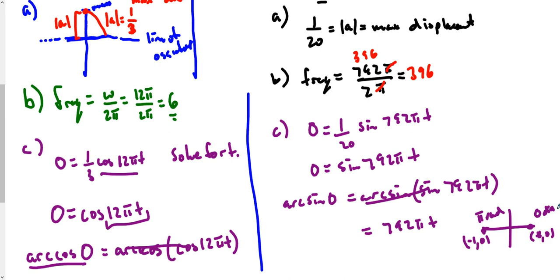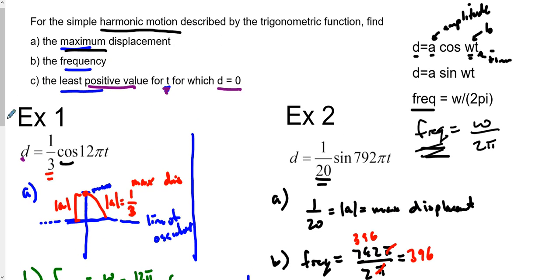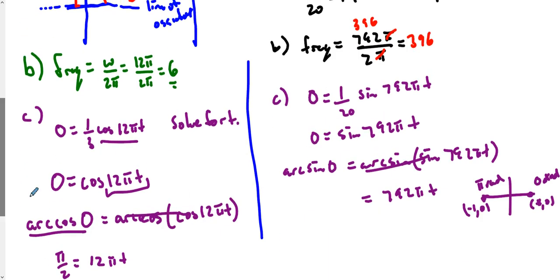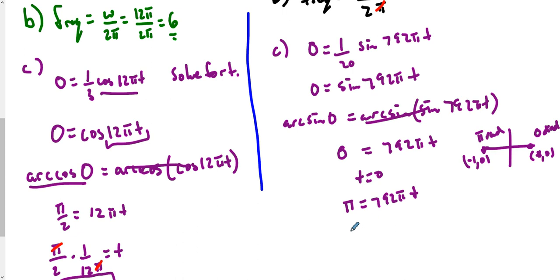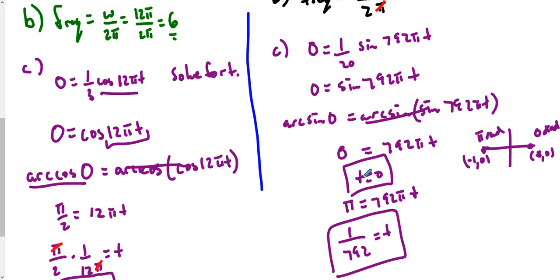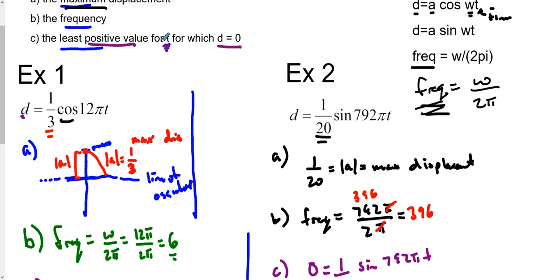So the least positive value for T: if we use 0, then T equals 0. But since zero isn't technically a positive number, we use π instead. That gives us π = 792πT. Dividing both sides by 792π, the π's cancel out, and we get T = 1/792. So our closest positive value is T = 1/792.